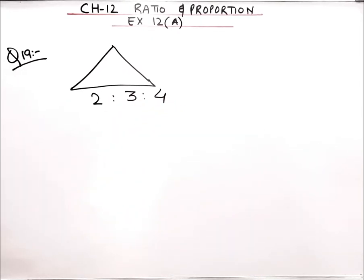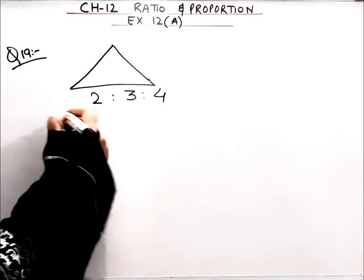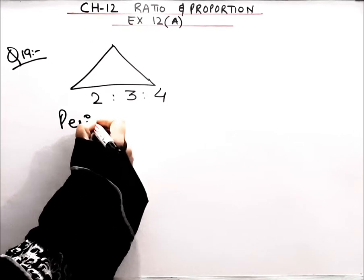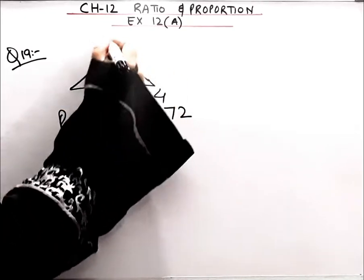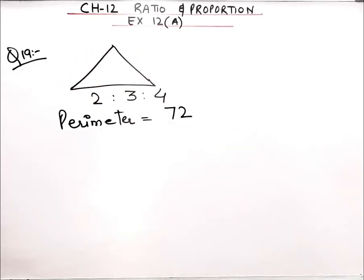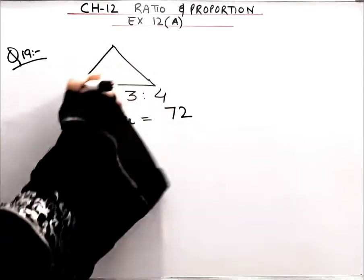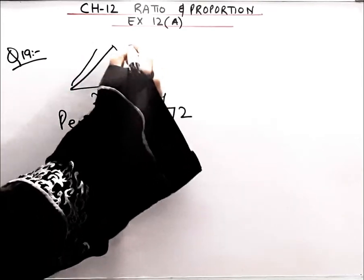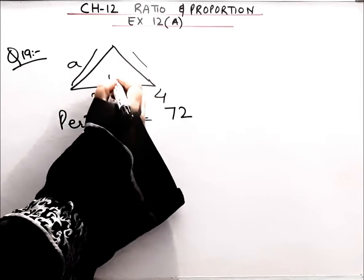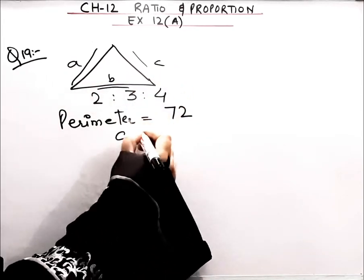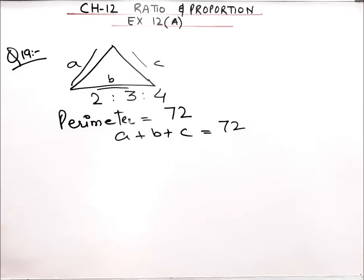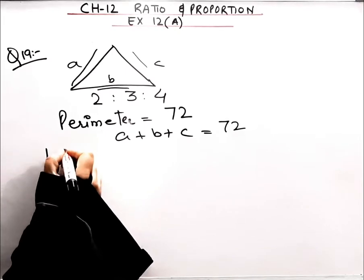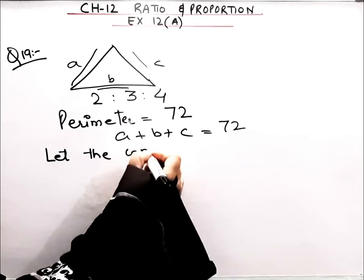In the next part, the perimeter is given as 72 cm. The perimeter of any figure is the boundary — the sum of all boundary sides. So here, this side is a, this side is b, this side is c, and a plus b plus c equals 72 cm. Now we'll assume a constant — let the constant be x.